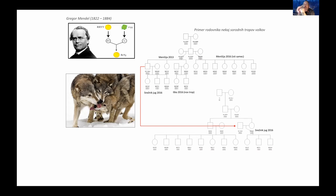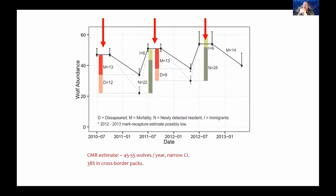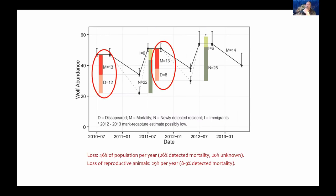Genetics also allows us to recognize individual wolf packs and follow their social behavior. Sampling was very intensive, giving us precise population size estimates every year. The population size seemed to be slowly increasing throughout the study; however, we also observed huge mortality — losing nearly half of the population each year.